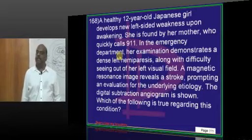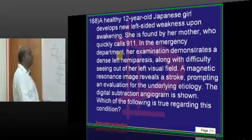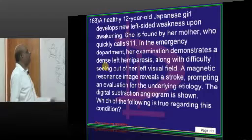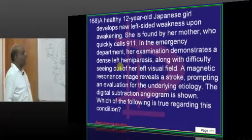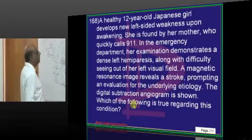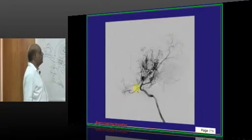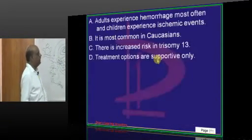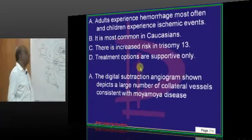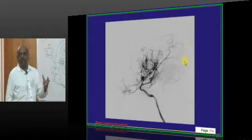A 12-year-old girl has left-sided weakness; she is found by her mother, who quickly calls 911. There is dense left hemiparesis along with difficulty seeing out of her left visual field. MRI reveals a stroke. An angiogram is done showing decreased flow and a large number of collateral vessels — this appearance is called Moya Moya disease.